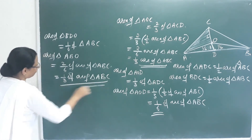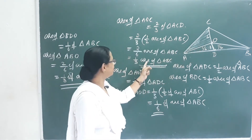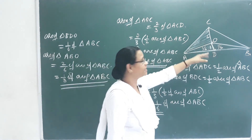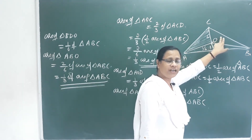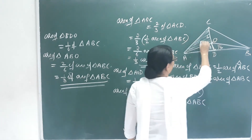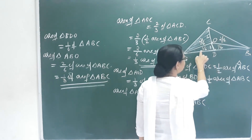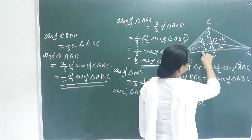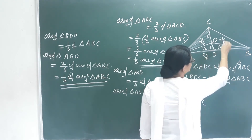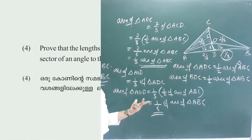So all three triangles each equal one third: this is 1/3, this is 2/6, this is 2/6, with 1/6 and 1/6 adding to 2/6 which is 1/3. All three areas are each one third of ABC.